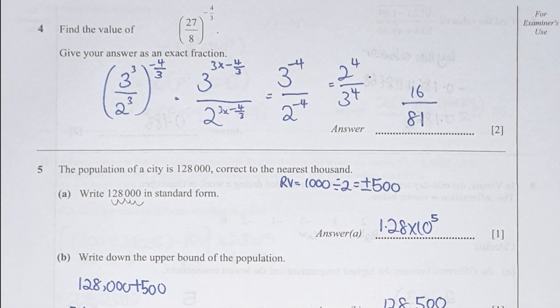For question 4, I first changed 27 into 3 to the power of 3 and 8 into 2 to the power of 3. Then I multiplied by the power of negative 4 over 3, giving 3 to the power of negative 4 over 2 to the power of negative 4. To get rid of the negatives, I swapped numerator and denominator, so the final result is 16 over 81.